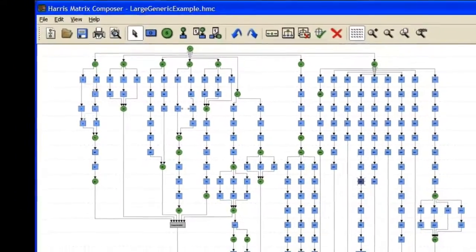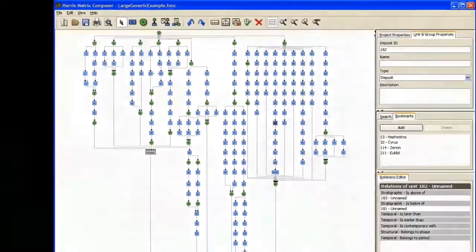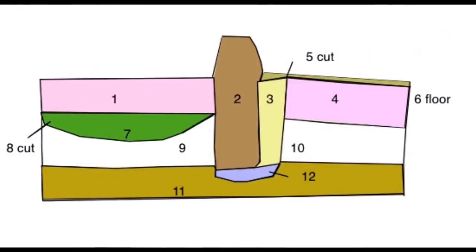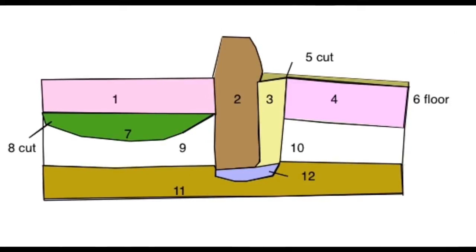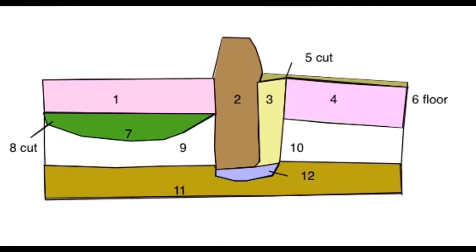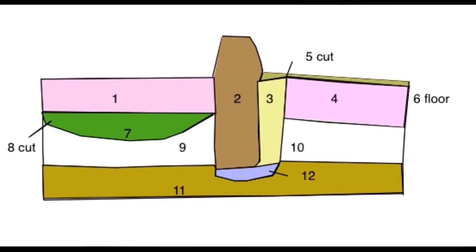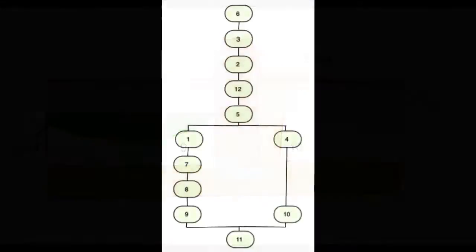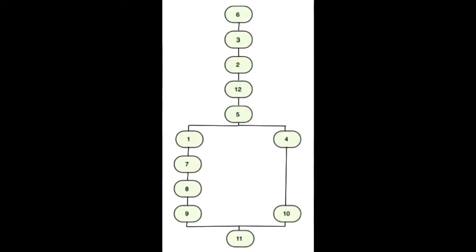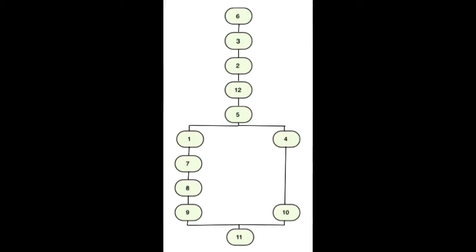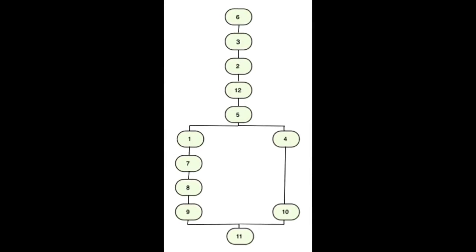The idea is now standard practice on sites around the world. So, how does this relate to a real archaeological site? Here is a hypothetical cross-section. Notice how cut number 5 is above feature 11, it separates features 9 and 10, and it contains feature 12. Here is the same cross-section represented using a Harris Matrix. Notice how the same features are now represented in a way which is clearly defined and cannot be misconstrued.